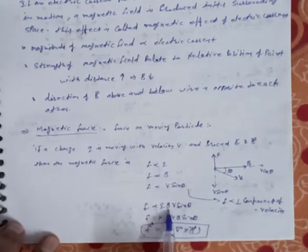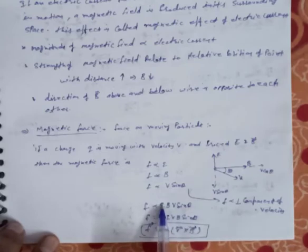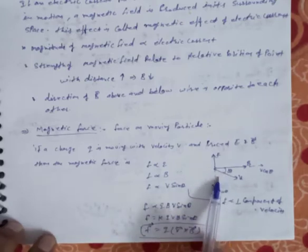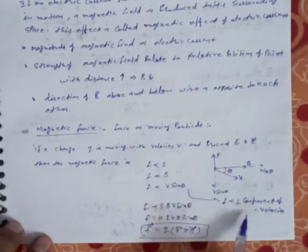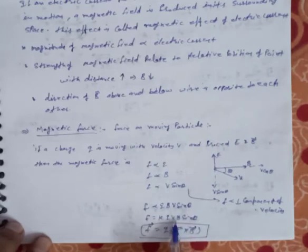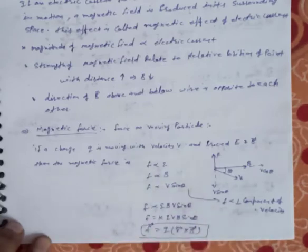Combining all three proportionalities, we get F directly proportional to qvB sin θ, where q is the charge, B is the magnetic field, v is velocity, and sin θ is the sine of the angle between the magnetic field and the velocity vector. Simplifying with constant k=1, the formulation becomes F = qvB sin θ, which in vector form is F = q(v × B). Since v × B gives a perpendicular resultant, F is always perpendicular to the component of velocity.